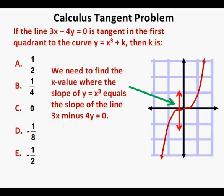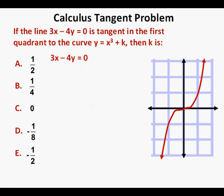What we need to find is the x value where the slope of the curve y equals x cubed equals the slope of the line 3x minus 4y equals 0. We'll first find the slope of that line by solving for y in slope-intercept form. Subtracting 3x from both sides gives negative 4y equals negative 3x. Dividing both sides by negative 4, we get y equals 3/4 x. So the slope of the line 3x minus 4y equals 0 is 3/4.